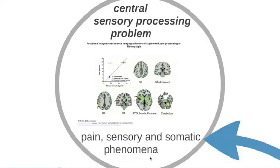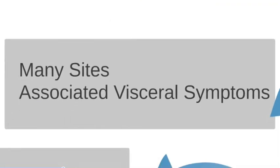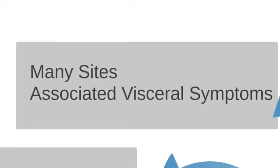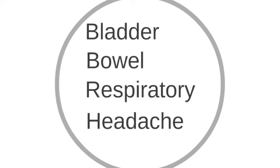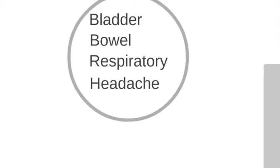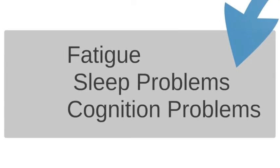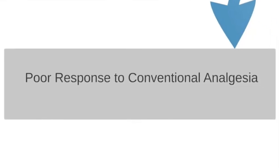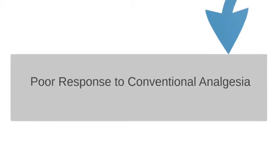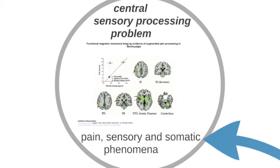With central pain, there are usually many sites and usually associated visceral symptoms — these can come from the bladder, bowel, respiratory system, headache, and other symptoms, all included as part of the sensory disorder. There are often central problems that are not somatic, like fatigue, sleep problems, and cognition problems. There is often a poor response to conventional analgesia because this pain is different from the somatic nociceptive pain we commonly encounter, and so it needs to be dealt with in a different way.